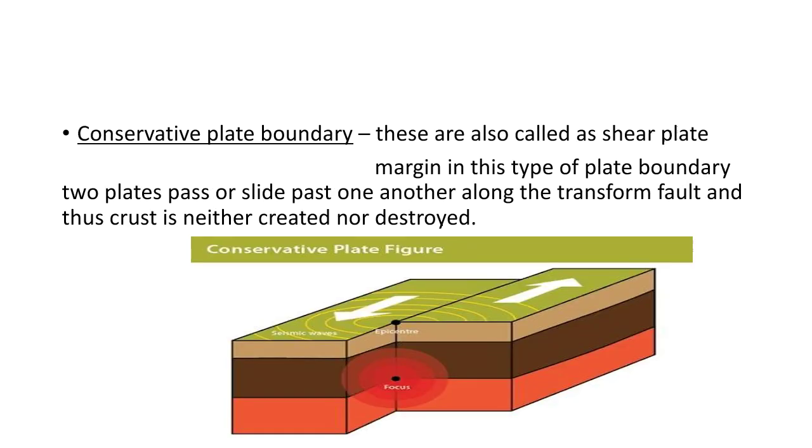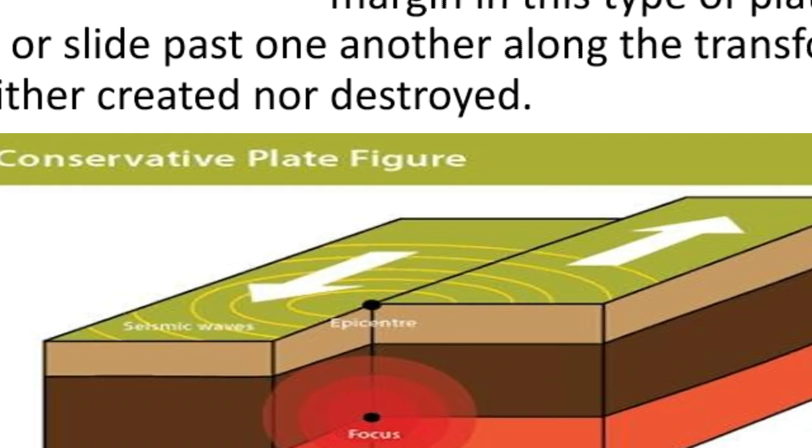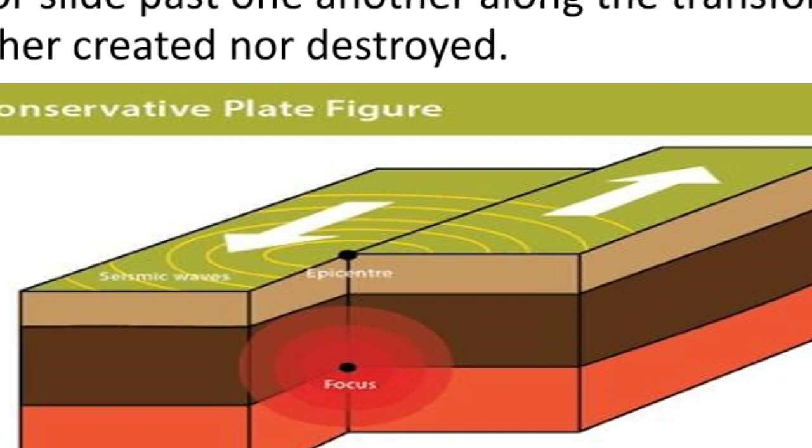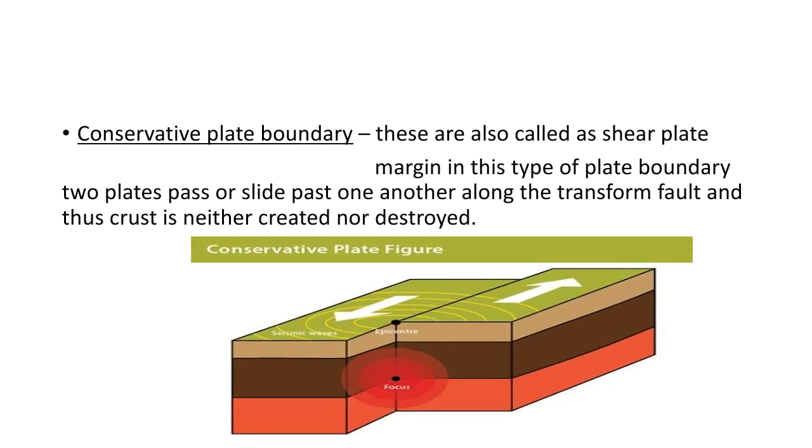Third one is conservative plate boundary. These are also called as shear plate margins. In this type of plate boundary, two plates pass or slide past one another along the transform fault, and the crust is neither created nor destroyed. In this, what happens is two plates are moving with friction type motion. One plate in one direction, another plate in another direction, but they are neither converging nor diverging. They have a parallel movement to each other, as you can see in this diagram. This parallel movement between two plates. And this is known as conservative plate boundary and also known as the shear plate margins, because they are shearing in their movement.